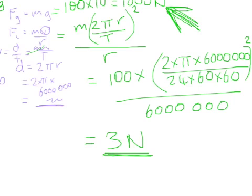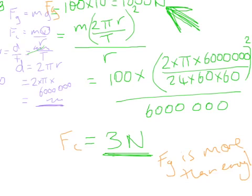Okay, so from this we can gather that yes, the centripetal force is very small compared to the force due to gravity. And that means that the force due to gravity is more than enough to keep us fixed to the surface of the earth as it rotates around on its axis.